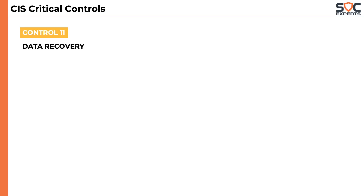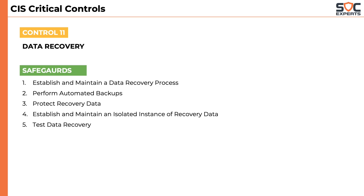The eleventh control is data recovery. In times when ransomware attacks are everyday news, it becomes highly necessary for a company to have data recovery capabilities. This control has five safeguards which talk about establishing a process for data recovery, having automated backups, protecting the backup itself, and regularly testing the backed-up data.